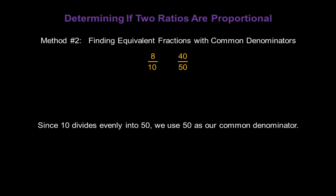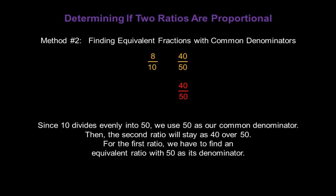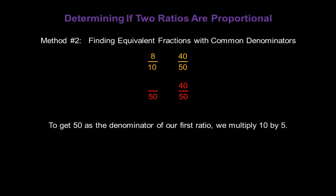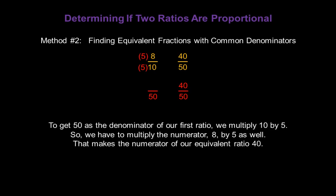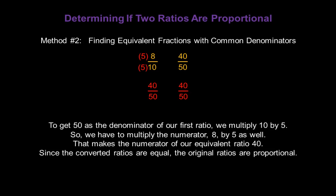Since 10, the smaller numbered denominator, divides evenly into 50, the larger numbered denominator, we can use 50 as our common denominator. The second ratio stays as 40 over 50 — we won't have to change anything. But for the first ratio, we have to find an equivalent ratio with 50 as its denominator. To get 50 in the denominator, we multiply the 10 by 5, so we also multiply the numerator 8 by 5, giving us 40. Now it's easy to see our converted ratios are equal, and that means the original ratios are proportional.